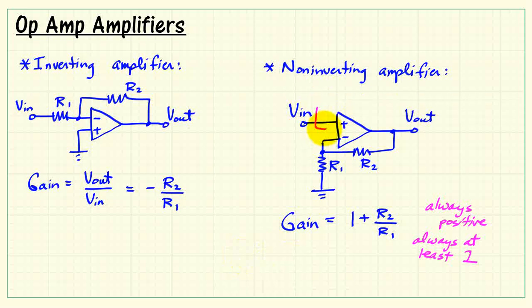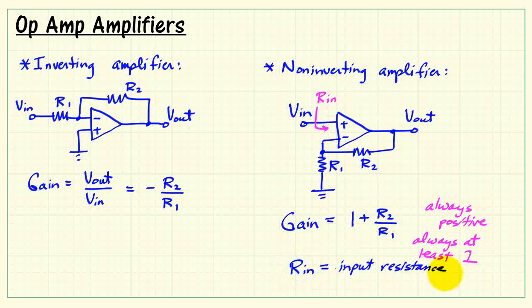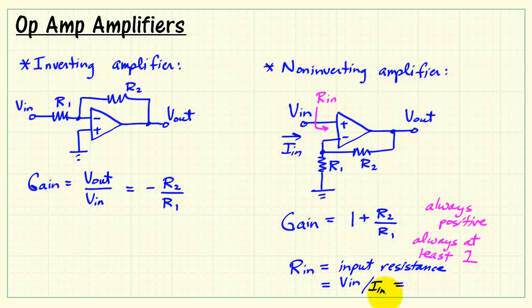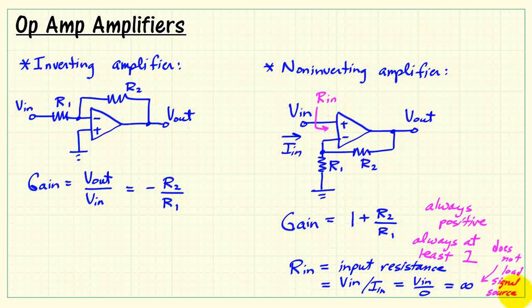The equivalent or effective input resistance of an amplifier is an important consideration here as well. The input resistance seen looking into the input terminal can always be found by determining the ratio of the applied input voltage divided by the current that flows — that is, the input current. The nature of the op-amp is such that its input current directly into a terminal is always 0, or very close to 0. From this, we conclude that the input resistance is effectively infinite, or at least extremely high, and the non-inverting amplifier does not load its signal source.